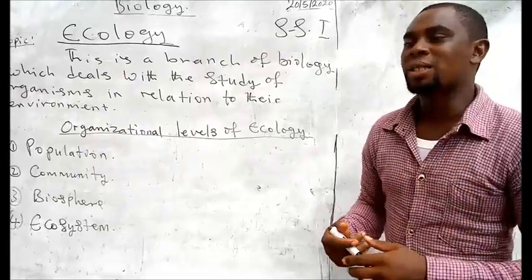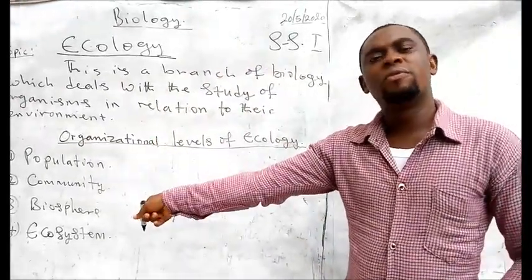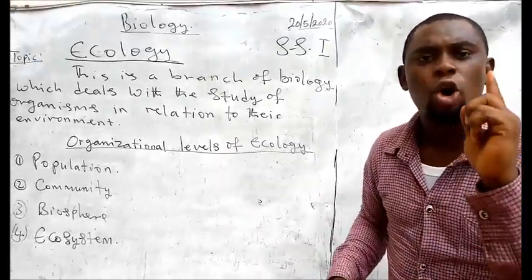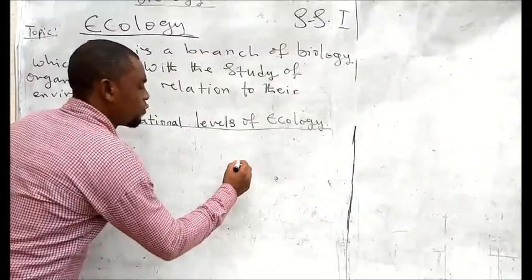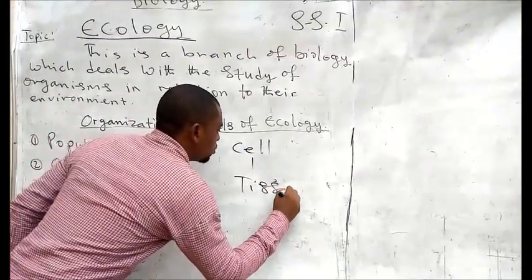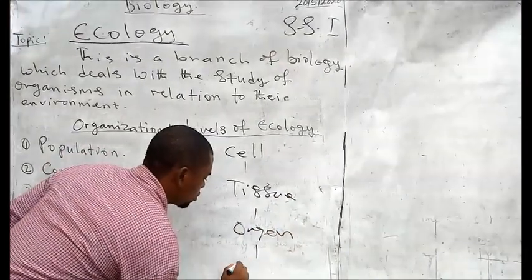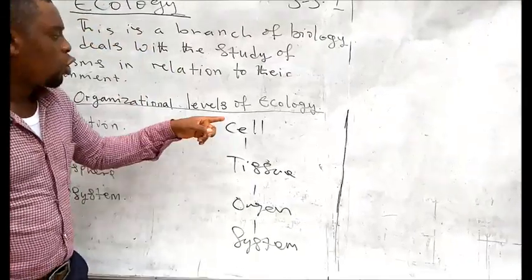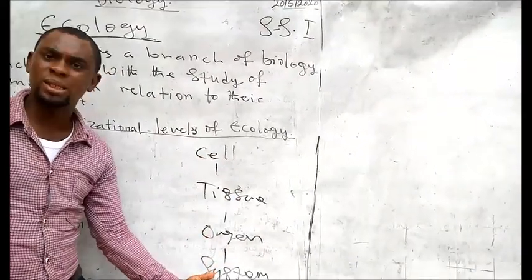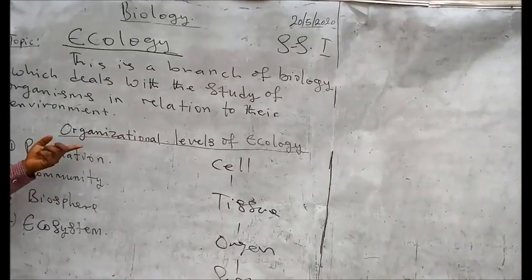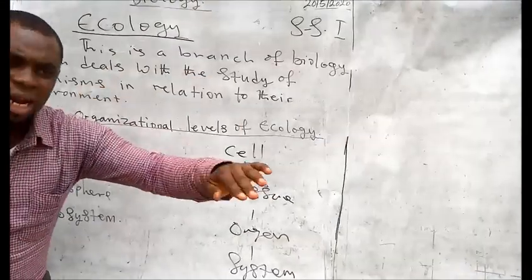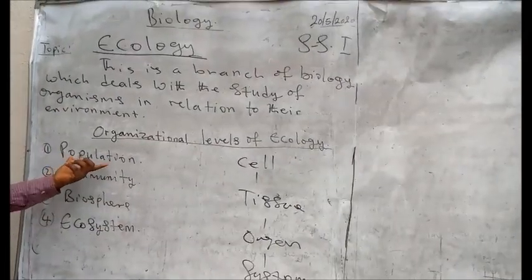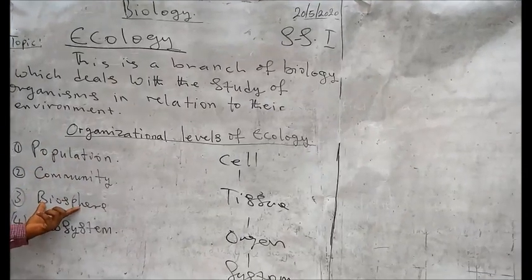Now let's move to the organizational levels of ecology. Just as we learned in the first-term SS1 scheme of work about the organizational level of life — cell, tissue, organ, and system — so also we have organizational levels in ecology. Ecology has been arranged into levels from the basic level upward. We have: first, population; second, community; third, biosphere; and fourth, ecosystem.